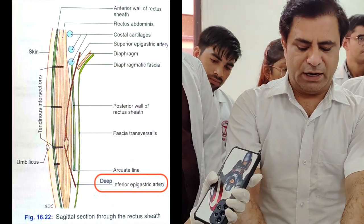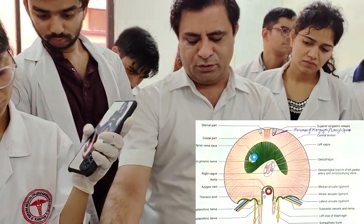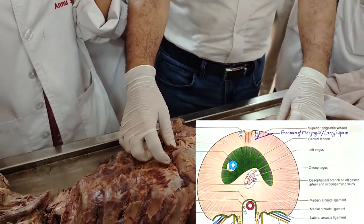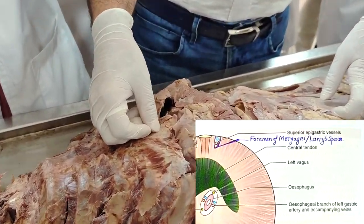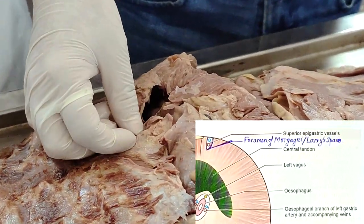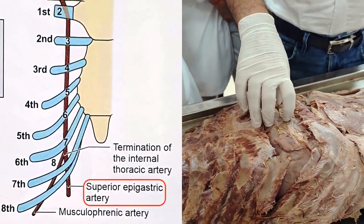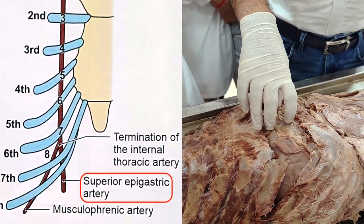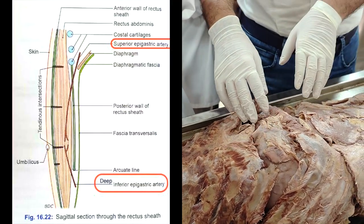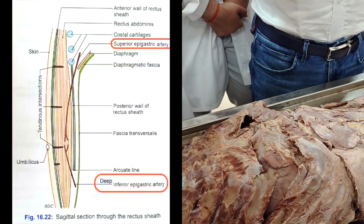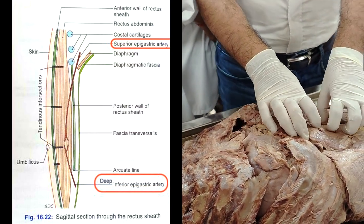They will reach towards the umbilicus. There was a space — the space of Larrey, the foramen of Morgagni — at the xiphisternum, behind the xiphisternum on the two sides. The internal thoracic artery was continuous as the superior epigastric artery, similarly entering into the rectus sheath by piercing the posterior wall of the rectus sheath. Both of them will reach to the umbilicus.